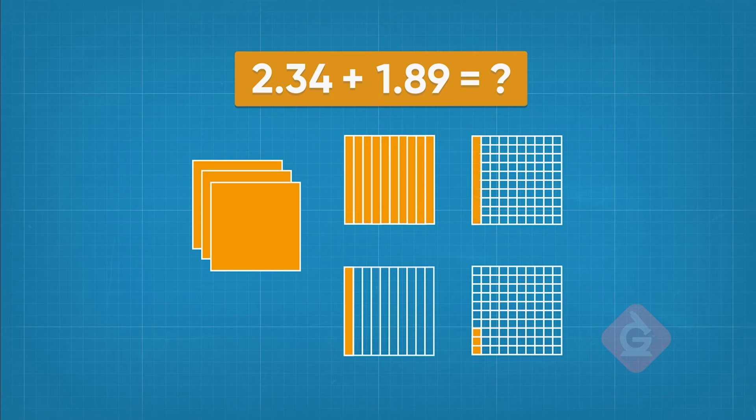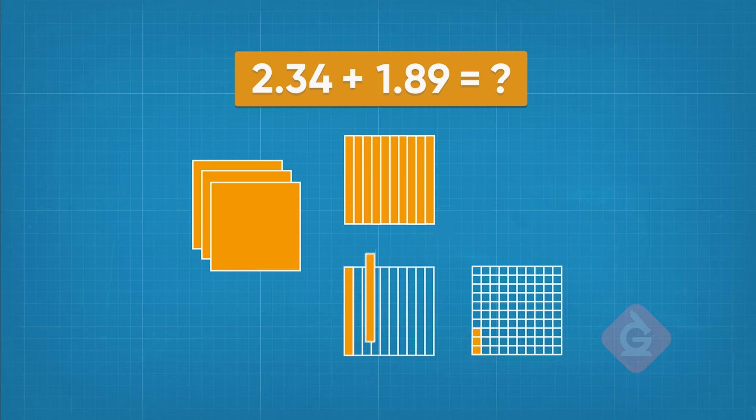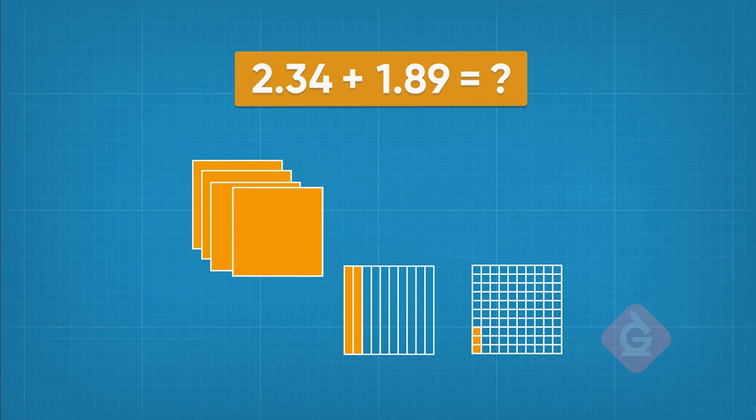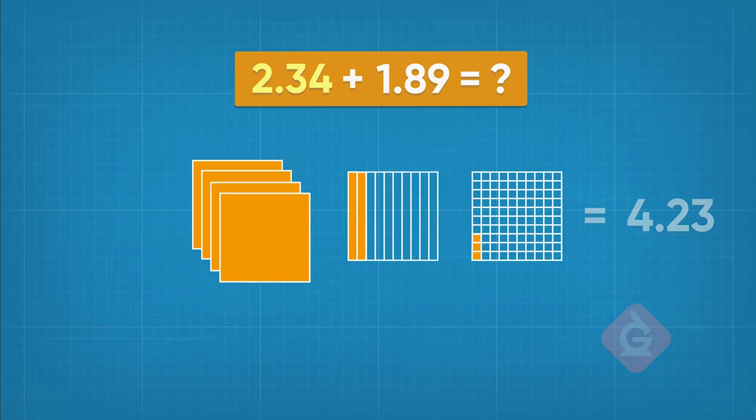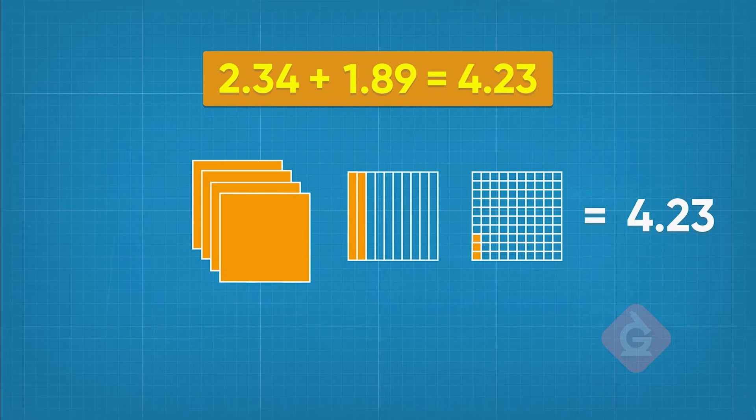10 hundredths can be grouped together to make 1 tenth. Now, we have 12 tenths in total. We can group 10 of those together to make 1 whole. So, $2.34 plus $1.89 equals $4.23.